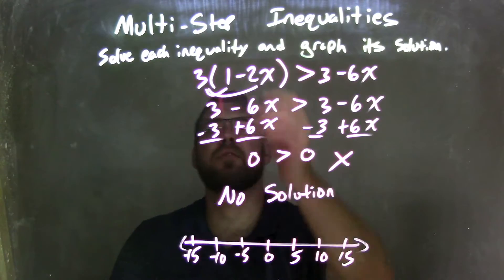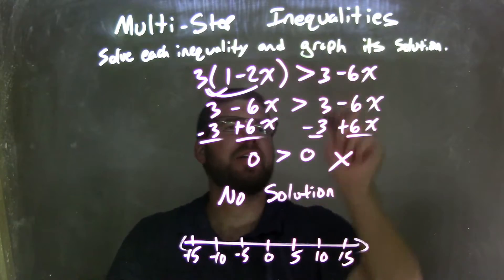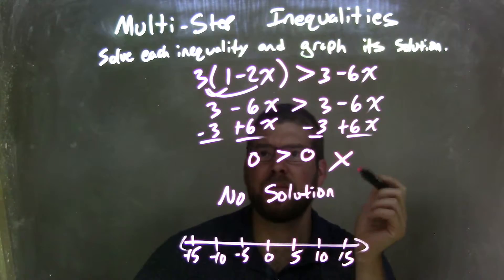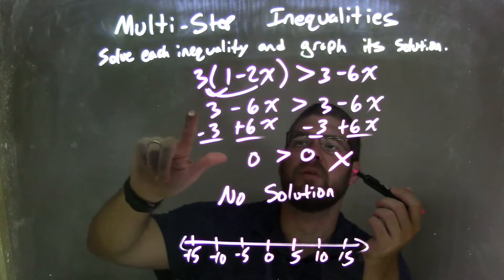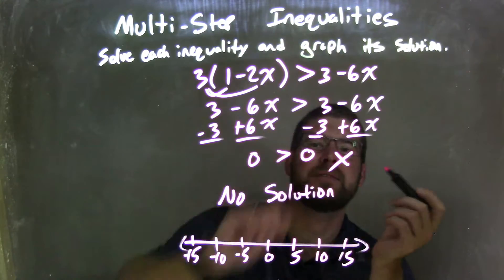So let's recap. We're given 3 times parentheses 1 minus 2x and parentheses is greater than 3 minus 6x. I distributed the 3 across, giving me 3 minus 6x is greater than 3 minus 6x.